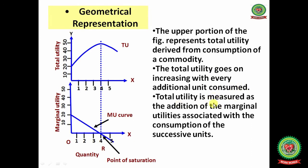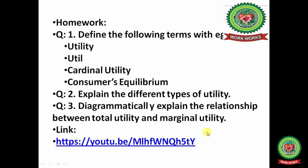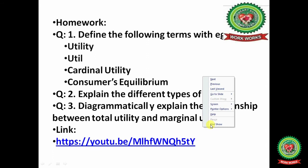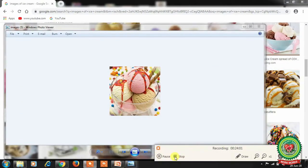Marginal utility review: you feel hungry, take one idli and get some utility or satisfaction. Consuming the second unit of idli gives more satisfaction. The additional satisfaction from the second idli is the marginal utility — it is derived from the additional unit consumed. From the table: first idli gives total utility 20 and marginal utility 20; second idli raises total utility to 32, so marginal utility is 32 minus 20 equals 12 — the satisfaction derived from the second idli.